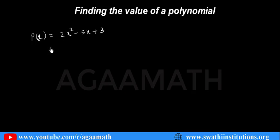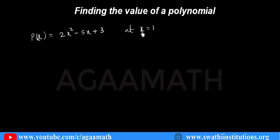Now we have to find the value of this polynomial at x equals to 1. So p of x is 2x squared minus 5x plus 3, and x equals to 1. It means in the place of variable x, if we take the value 1, what would be the value of the polynomial?